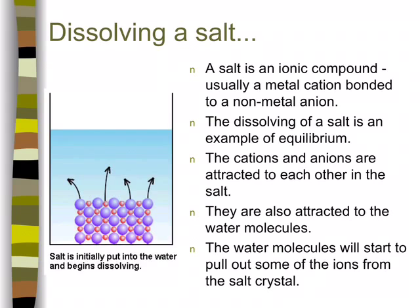Consider what happens when you dissolve a salt in water. Salt is an ionic compound, made almost always with a metal cation — sometimes a non-metal complex cation like the ammonium ion, but usually a metal like sodium, potassium, or copper — bonded to a non-metal anion. You may not be familiar with what it looks like at the atomic particulate level. In this picture, the larger purple spheres are the anions, the small red spheres are the cations, and they're arranged in a very regular lattice structure in the solid state.